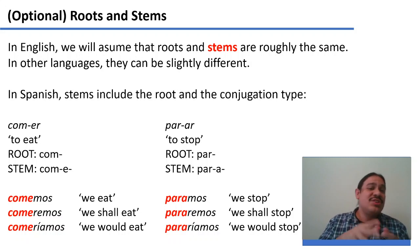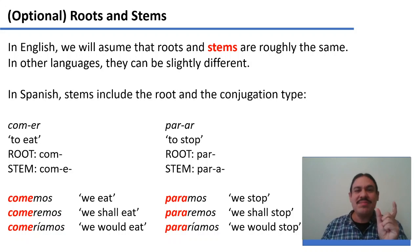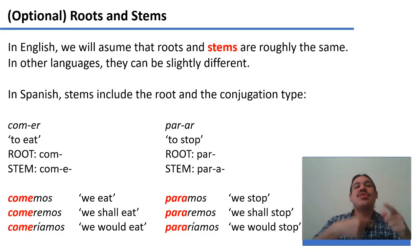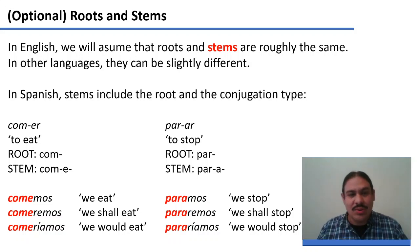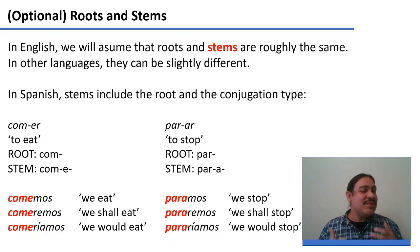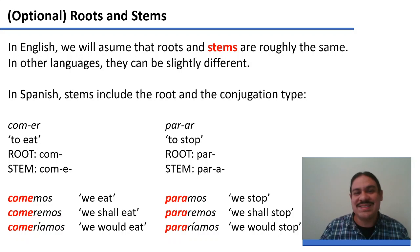In Spanish, 'comer' (to eat) is conjugated differently from 'parar' (to stop) because one ends in '-er' and one ends in '-ar.' The root is just the initial segments — C-O-M and P-A-R — which carry the meaning. The stem is the root plus the following vowel: 'come-' and 'para-.' Once we have the stem, we can conjugate for all alternatives: 'comemos' (we eat) versus 'paramos' (we stop). In English, roots and stems are treated as the same. In future videos we'll look at how stemming helps with text searches.